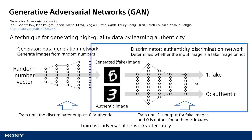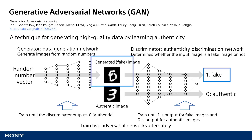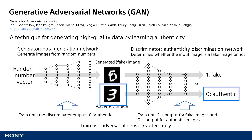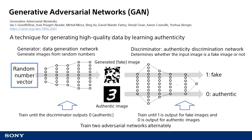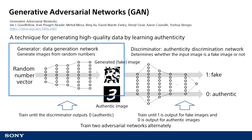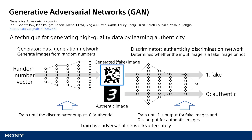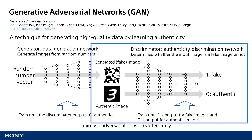The discriminator determines if an input image generated by the generator is fake or authentic based on a dataset of authentic images. The weight parameter w for the generator is initially set to random in the GAN, so that the generator generates multiple images based on a random number. In this initial state, the generator generates images that are clearly not handwritten digits. The images generated by the generator and the dataset are used to train the discriminator, using the same neural network architecture used to train a network to distinguish two images.